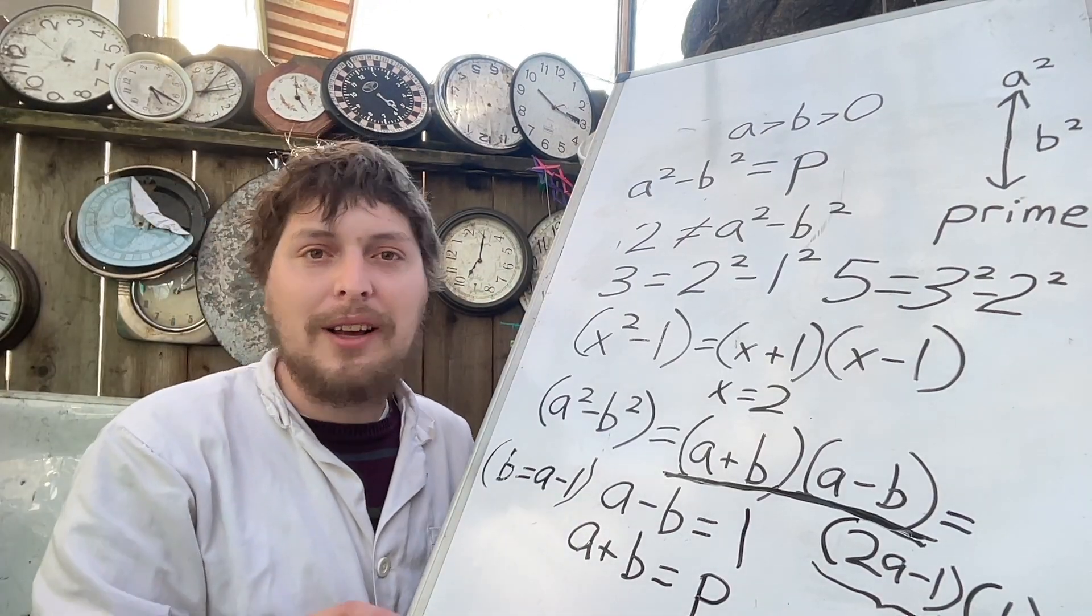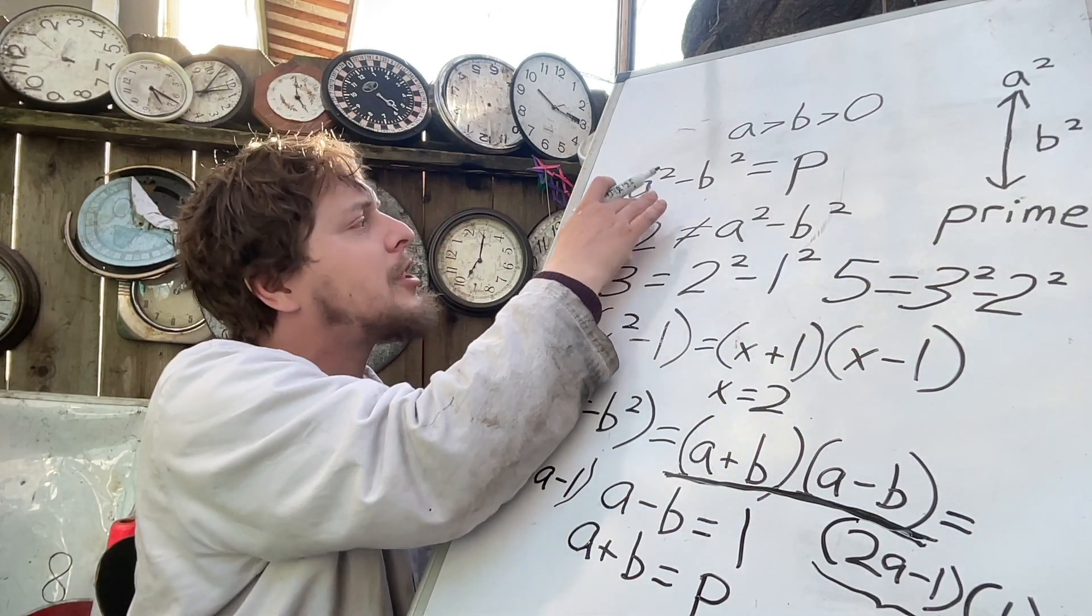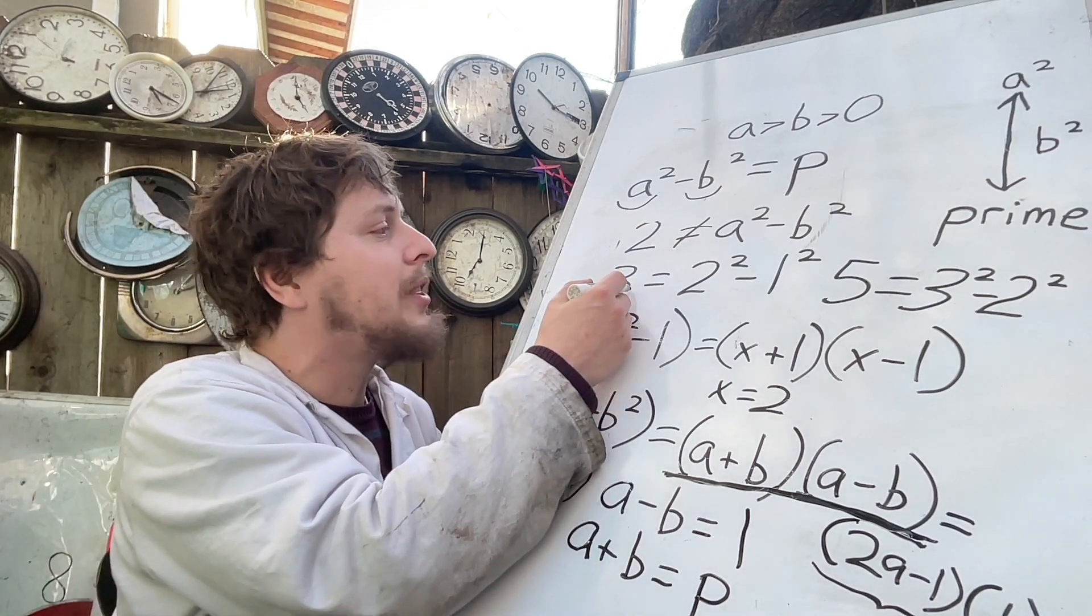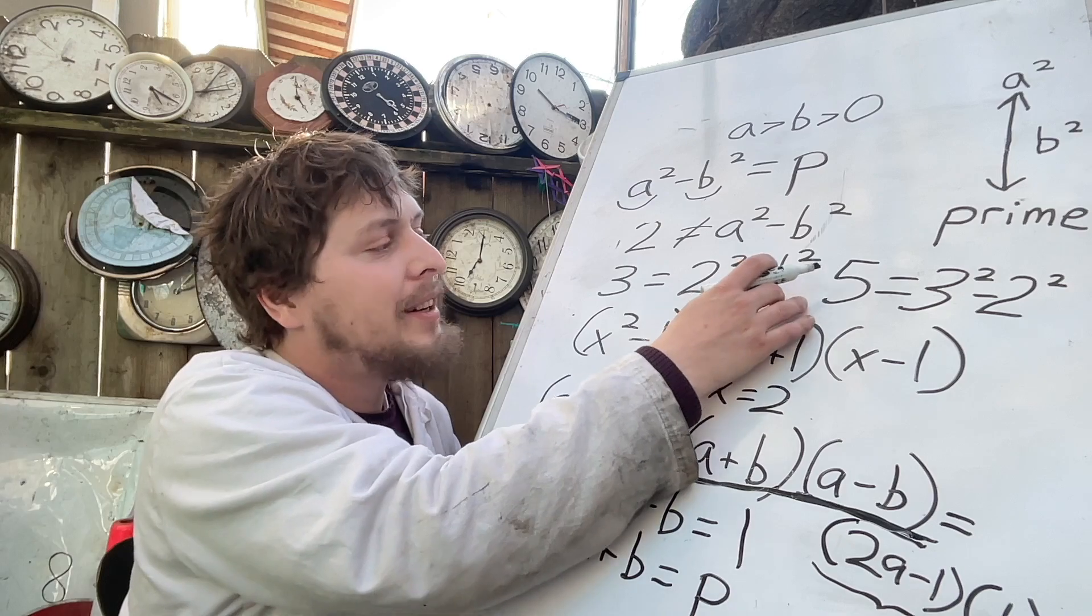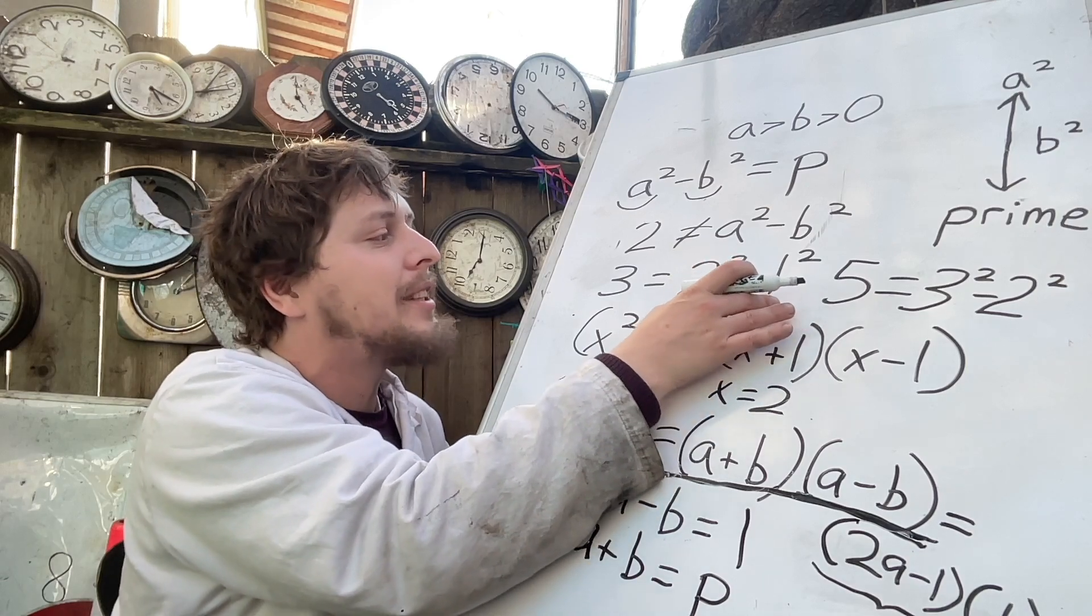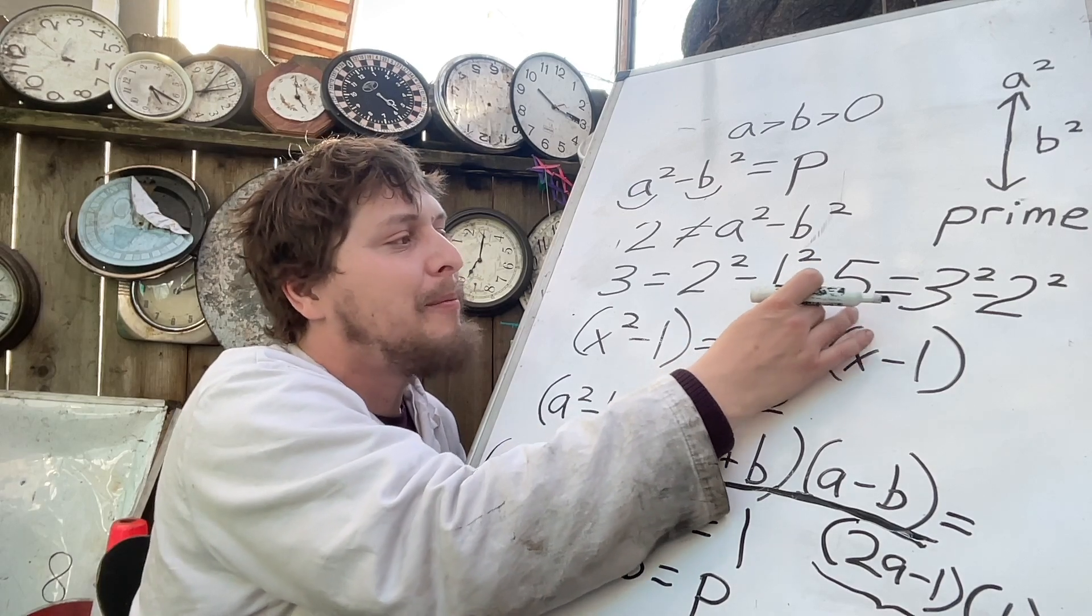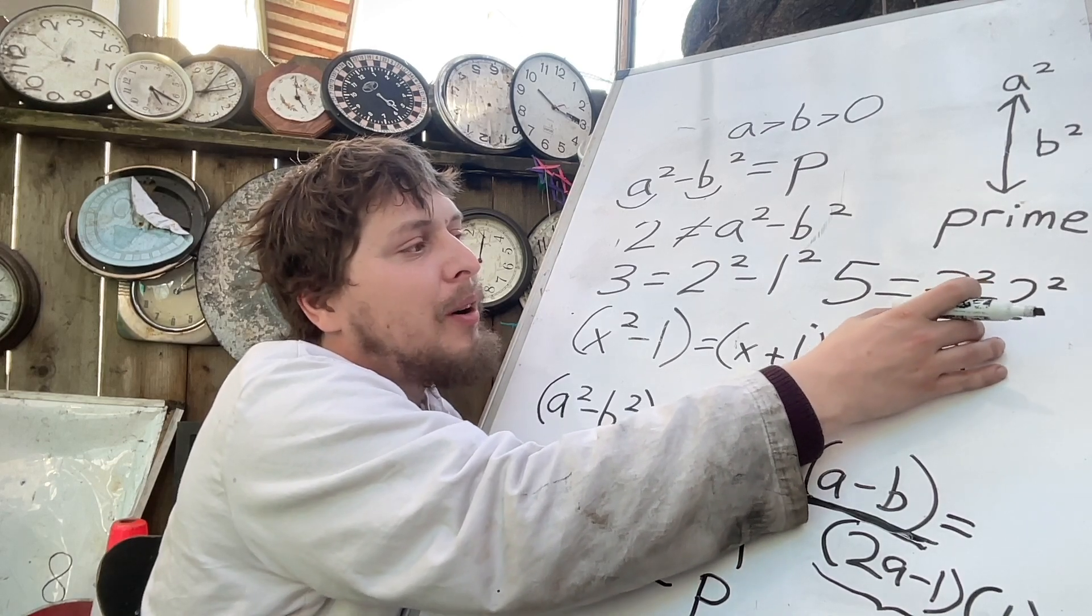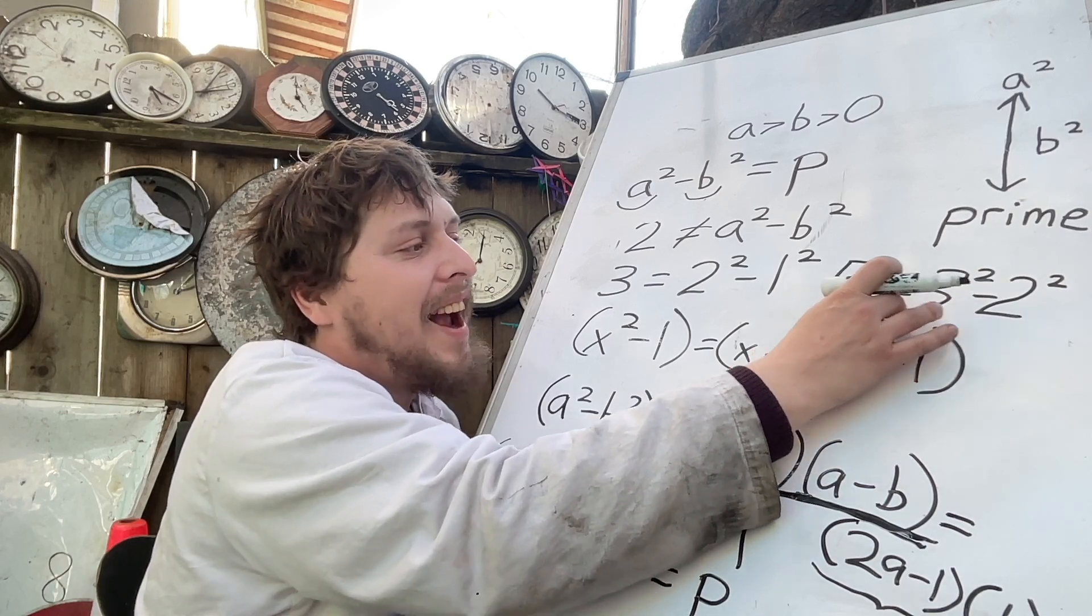These patterns also tell us some other cool things, like each prime lines up with a unique a that's specific to just that prime. This tells us, for example, that three is the only prime number that is either one less than any square number, or a square number less than four. Similarly, five is the only prime number that is either four less than another square number, or a square number less than nine. Overall, these are just some patterns that I realized the other day and thought were interesting.